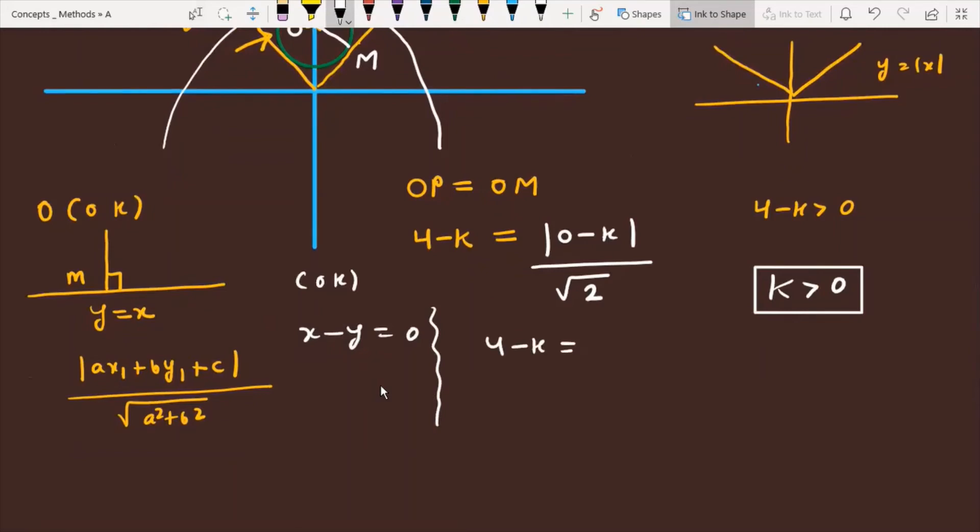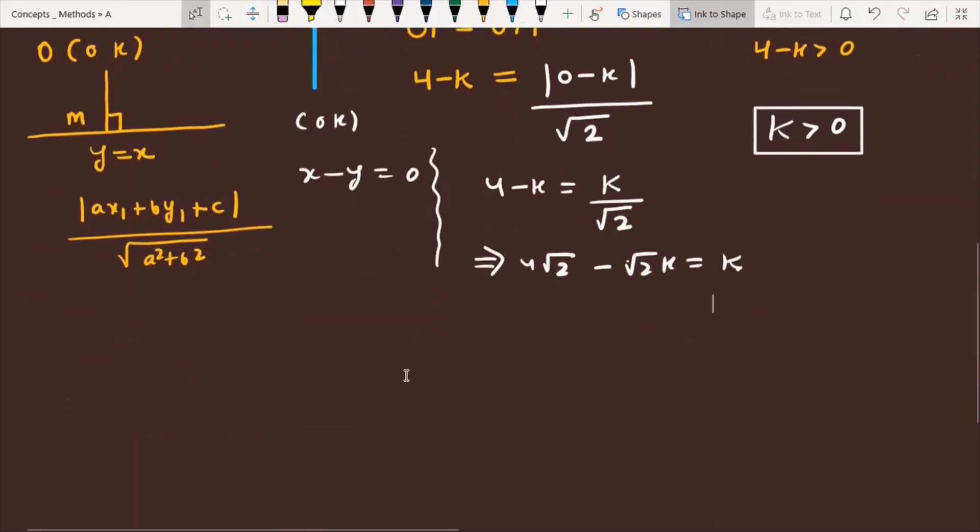Because k is above the x-axis, this will always be positive. If I simplify this equation further, then 4 minus k equals minus k divided by root 2. We can write 4 root 2 minus root 2 into k, and this is equal to k.